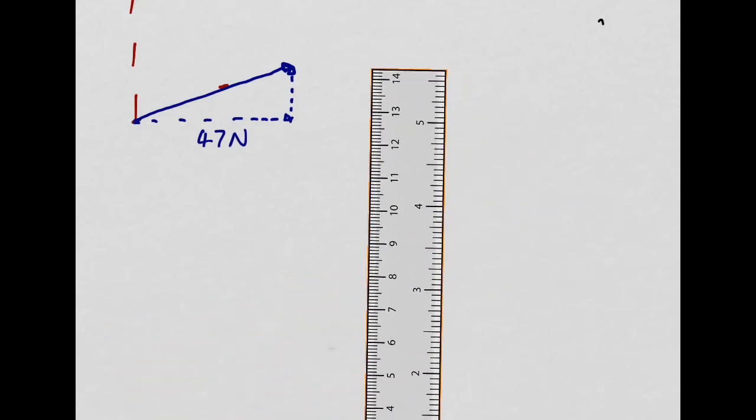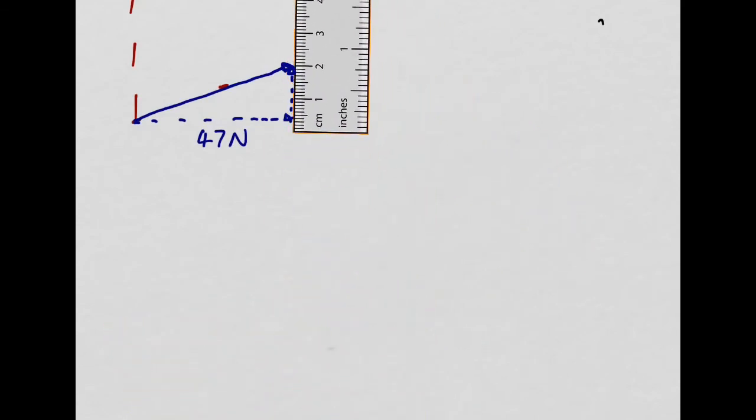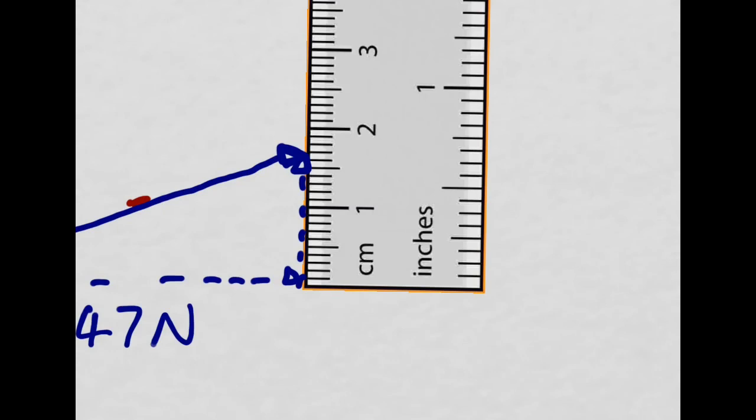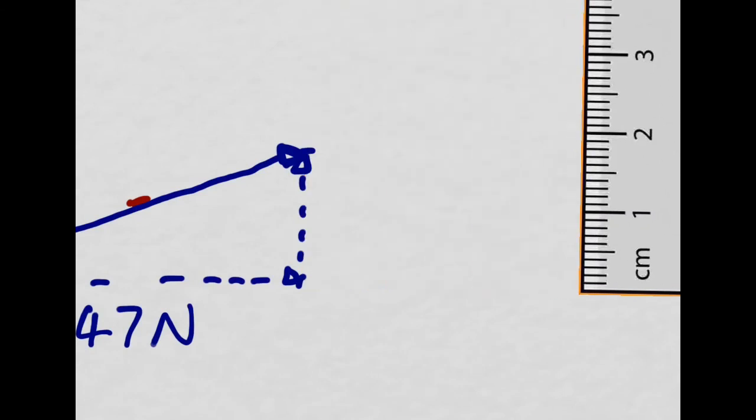And then let's try the vertical direction. And that is giving me what looks like 17 newtons. So 1.7 centimeters. Every centimeter is 10 newtons. So it's 17 newtons.